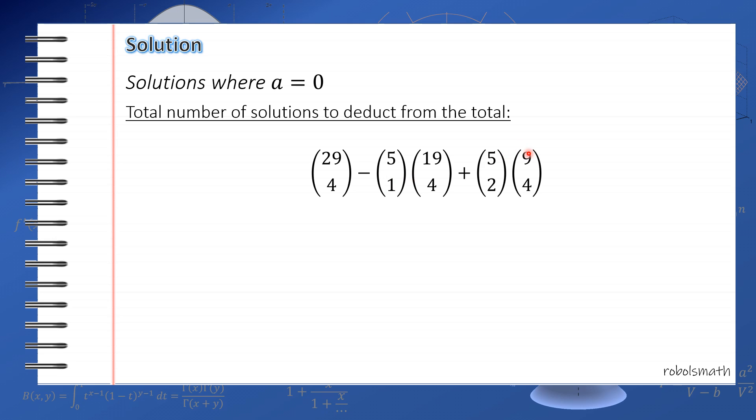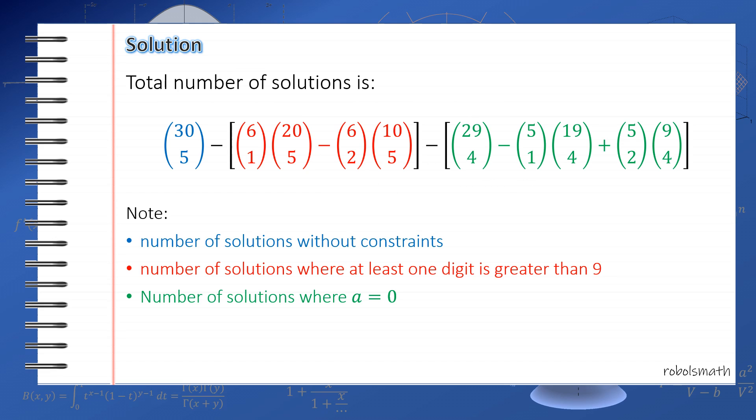I got rubbed here but that's just how it is. There are so many cases because this is the principle of inclusion and exclusion. Okay? So, the total number of solutions for this one is 30 taken 5 minus this case, which is the case where at least 1 variable is greater than 9, and this is the case where a equals 0.